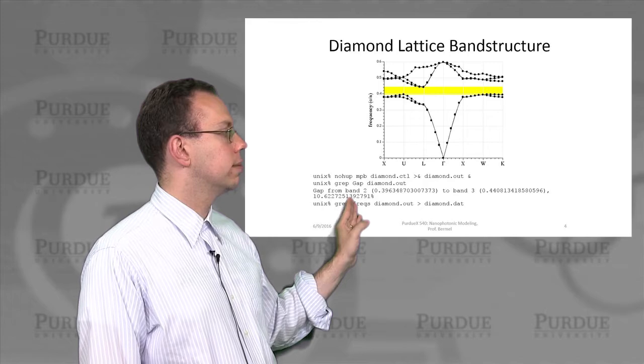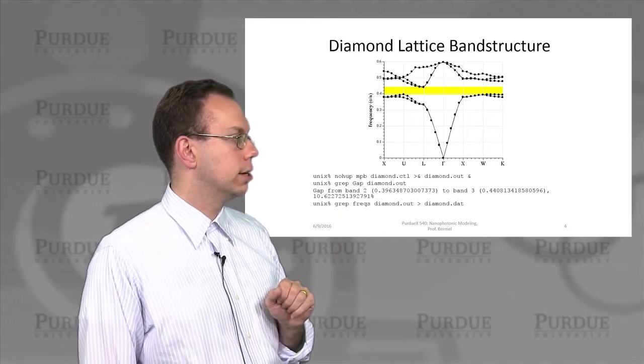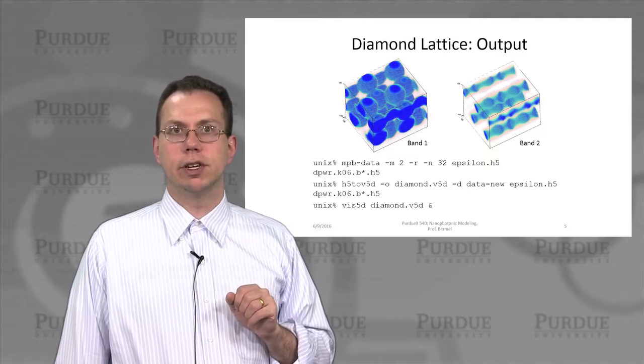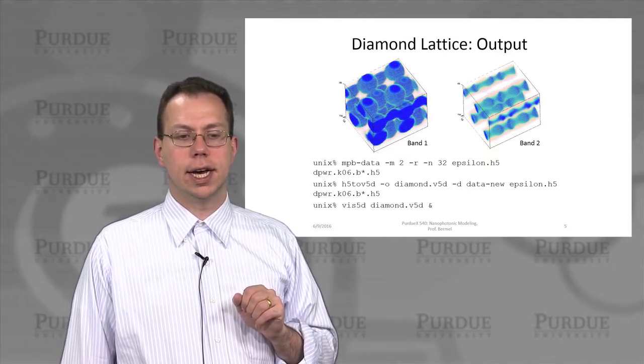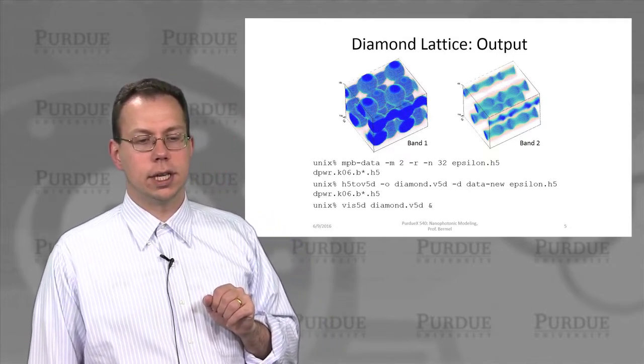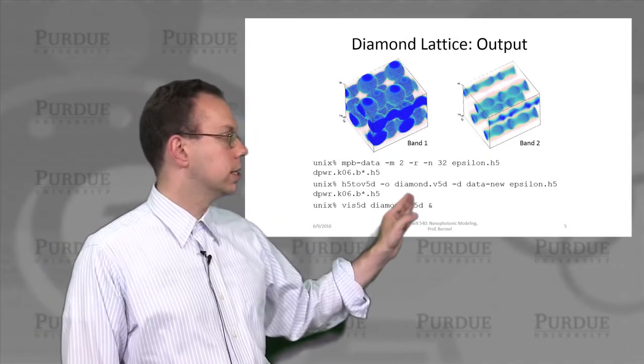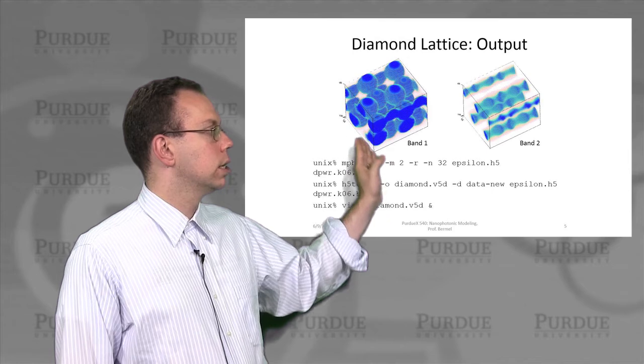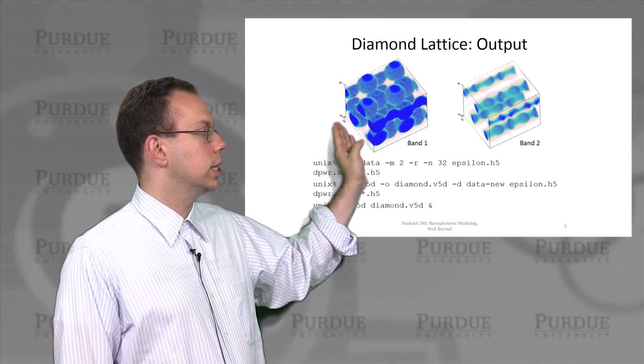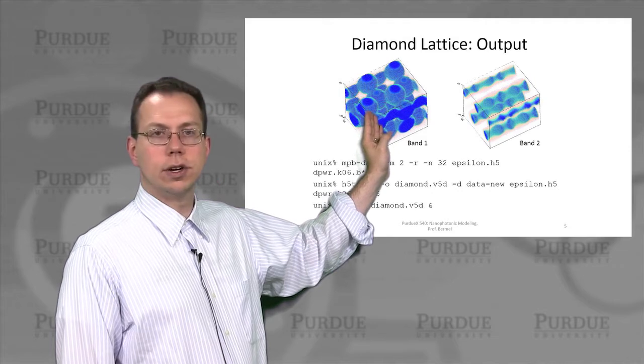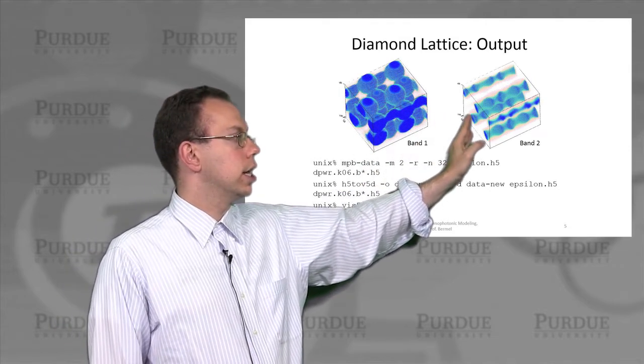And then you can also visualize the fields very easily. So you can see that the fields in this so-called Viz5D output, which is invoked here, would have localization either at the high dielectric regions, which is shown in blue, or in the low dielectric region, shown in this teal color.